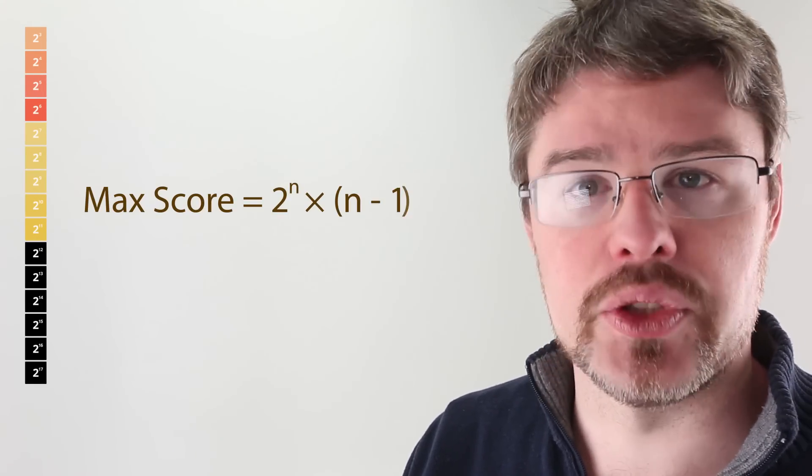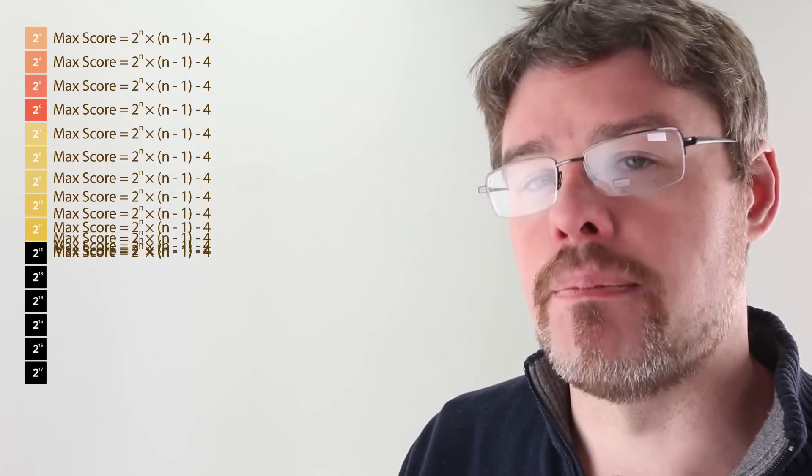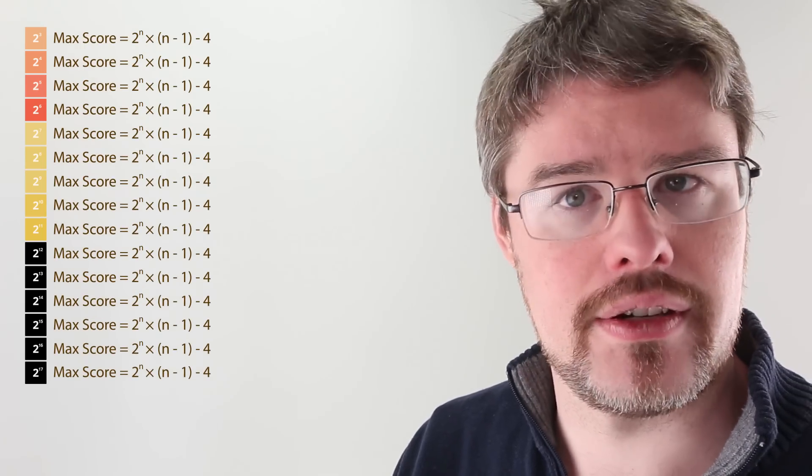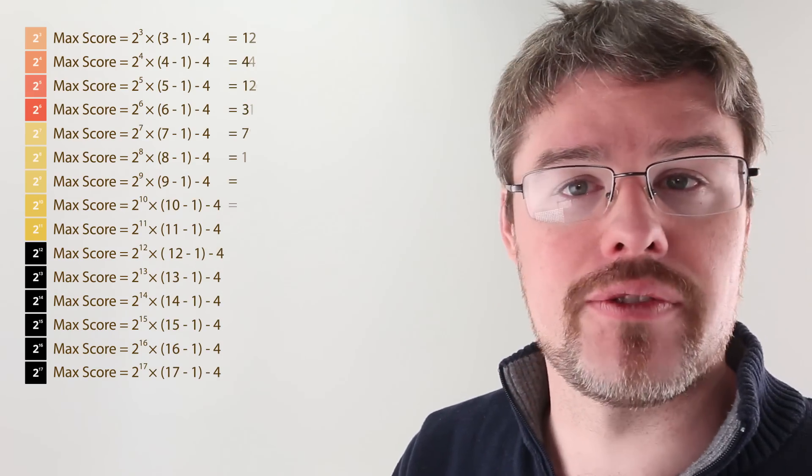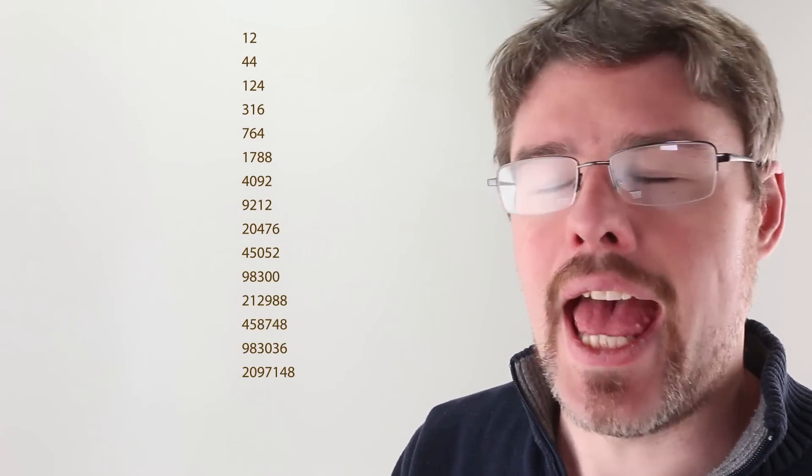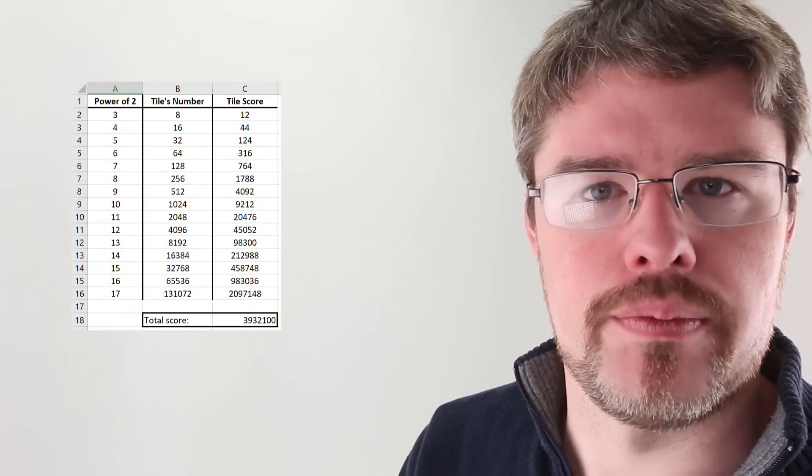We can now take the board with the densest amount of value, and take the maximum possible score for those tiles, and combine them to figure out the final answer. So, we can just plug in the values for the 3 through 17 tile and add them all up. Spreadsheets work really well for this. And so, boom. There's your answer.